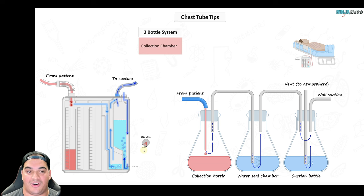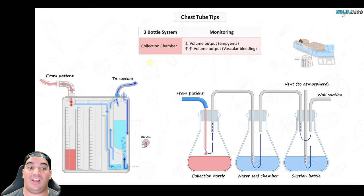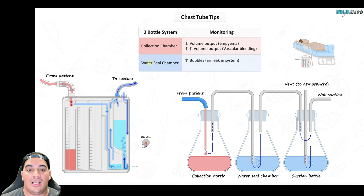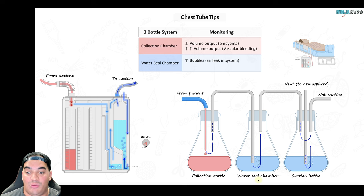Monitor the collection chamber output: in empyema, insufficient drainage may warrant TPA instillation or VATS. In hemothorax, excessive blood output suggests vascular bleeding requiring OR intervention. In the water seal chamber, bubbling indicates either ongoing pneumothorax (air still leaking from lung) or an air leak in the tubing itself — evaluate with chest X-ray, check tube position, and inspect the tubing.